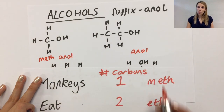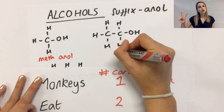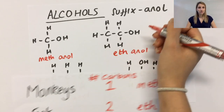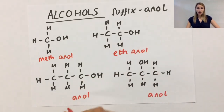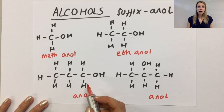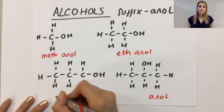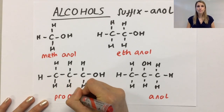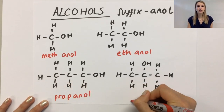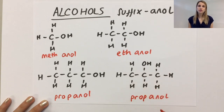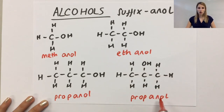The second one has two carbons, which has the prefix eth, making this one ethanol. The last two both have three carbons, making the prefix prop, so you've got two different forms of propanol.